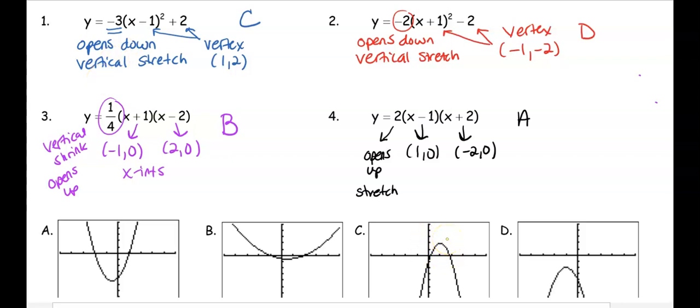Both of these graphs are opening down, but only one has the vertex at the correct location. Number two is still vertex form — we want a vertex at negative 1, negative 2. Opening down, it can only be one of these two options, and the vertical stretch makes it a skinnier graph.